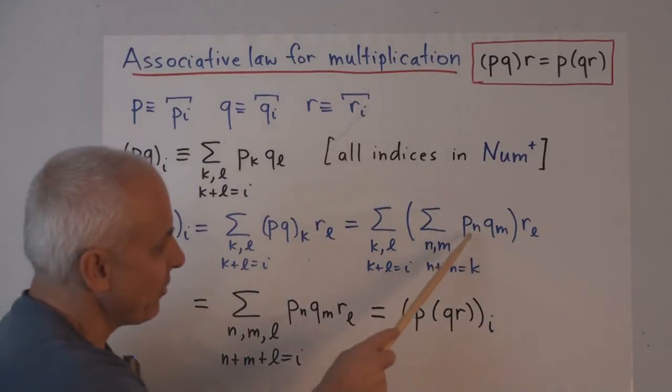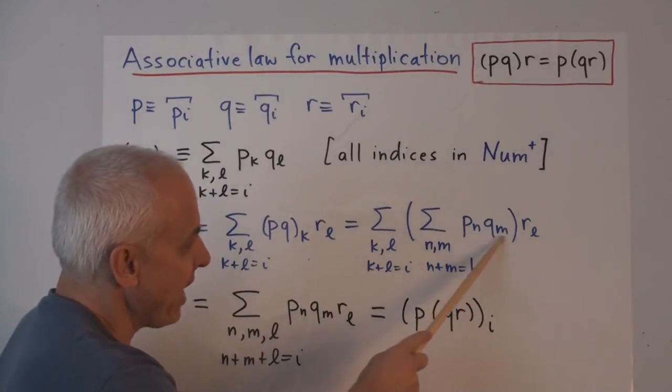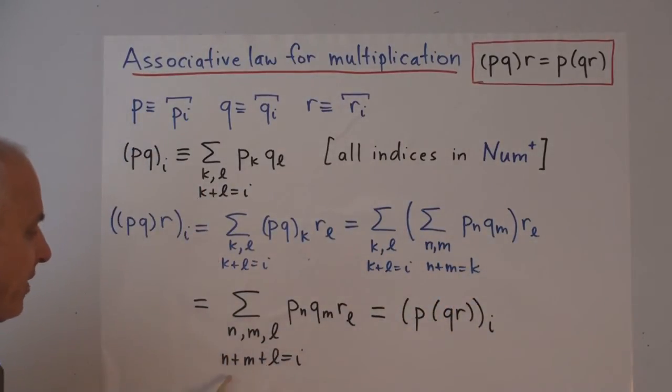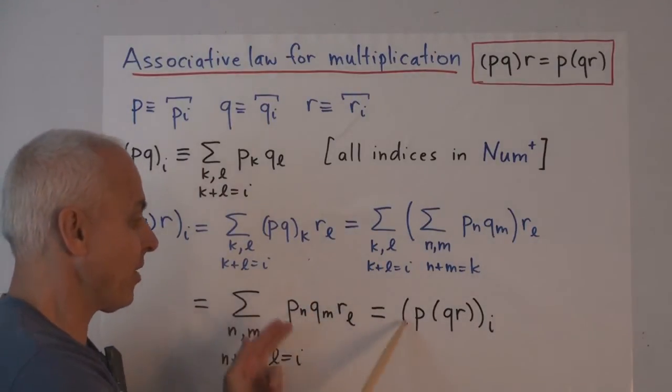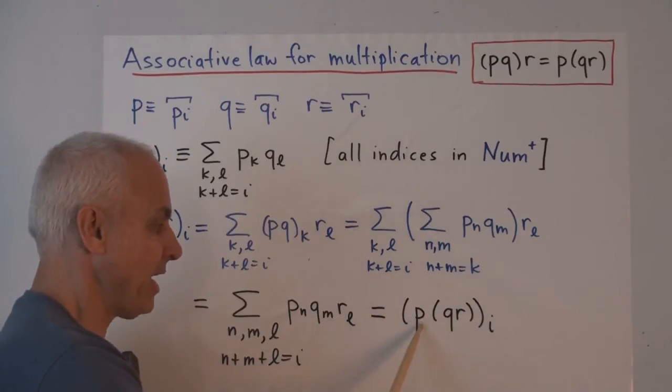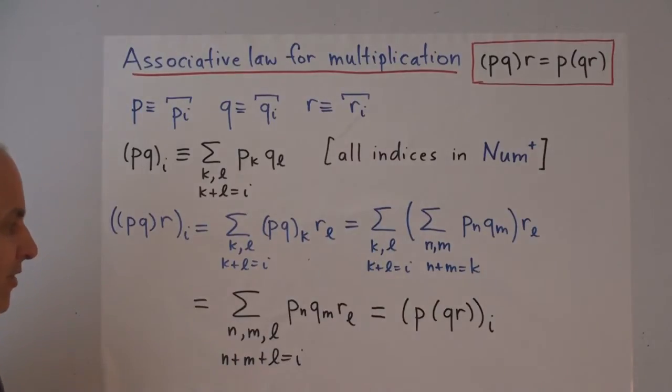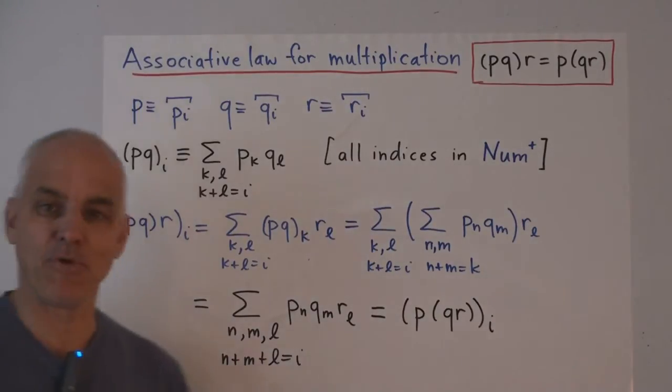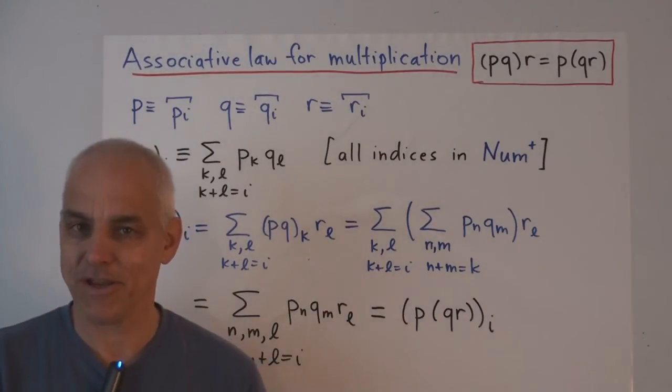But, when you stare at it, you really have these three numbers, N, M, and L. And they have the property that they add up to I. And we're really multiplying P sub N times Q sub M times R sub L, over all such possibilities. And when we've written it this way, we see that it's now symmetric. It'll be the same as what we get when we expand this thing out, P times QR, I-th component. That's essentially a sketch of the proof of why associativity works.